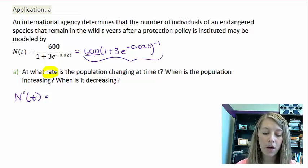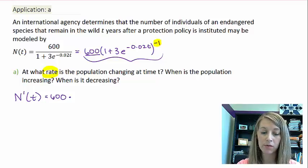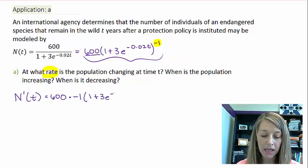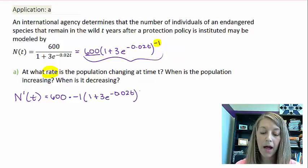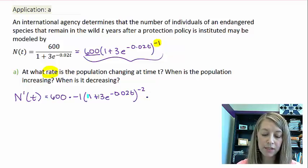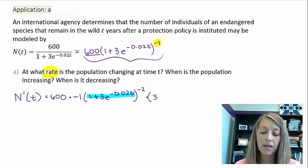So I pull my constant of 600 out in front. I multiply it by the power here. So there's my outside of my chain rule. And that is times negative 1. I keep my inside guy the same. I subtract the power. Now I need to multiply it by the derivative of the inside. Well, the derivative of 1 is 0 plus 3. I can pull my power off. The derivative of e is just itself, e to the negative 0.02t.